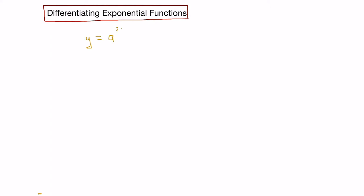Let's look at how to differentiate exponential functions. Exponential functions are in the form y equals a to the x, where a is greater than 0. Notice that the base is a constant and the exponent is a variable. The derivative of this exponential function is the function itself times the derivative with respect to x of the exponent, times the natural logarithm of the base.